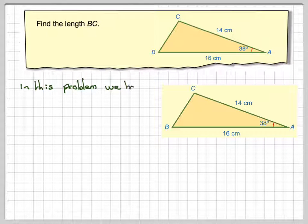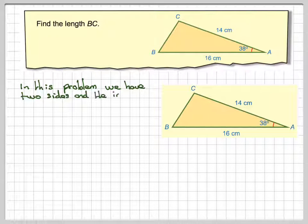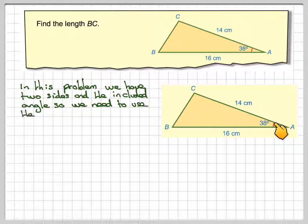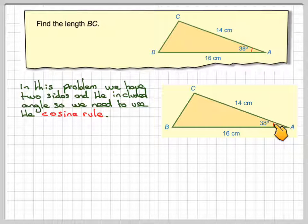So in this problem, we have two sides and the included angle. The included angle means the known angle between the two known sides. So here we have to use what's known as the cosine rule.